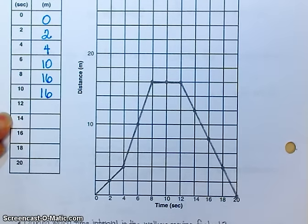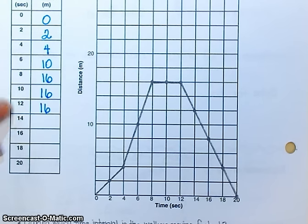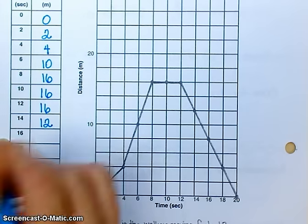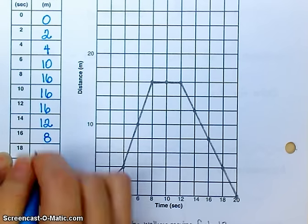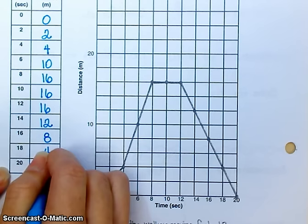At 12 seconds, still at 16. What does that tell me about right through here? I'm at 16 meters, 16 meters, 16 meters. Have I gone anywhere during this time interval? Nope. At 14, I'm at a distance of 12 meters. At 16 seconds? 8. At 18 seconds, I'm at 4. And at 20 seconds, I'm back at 0.